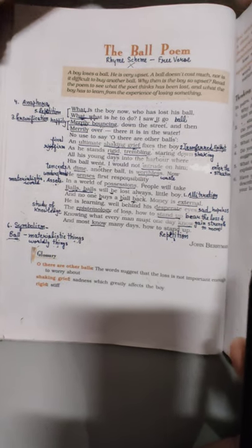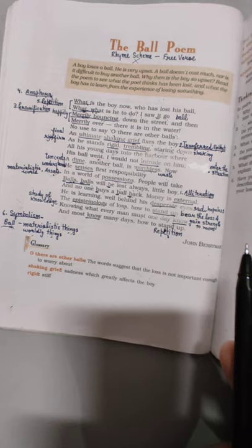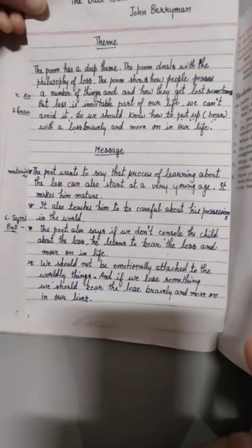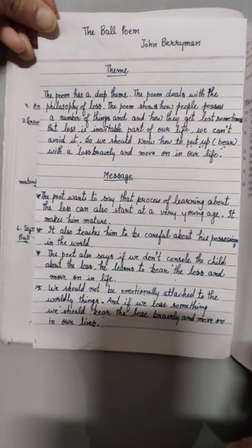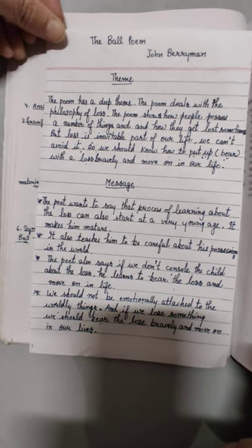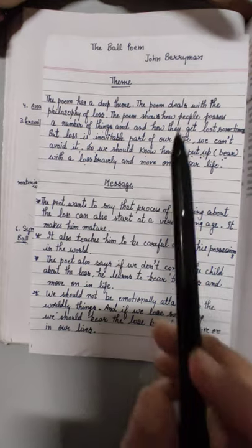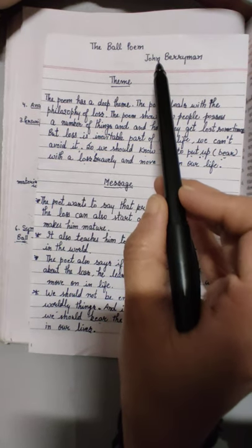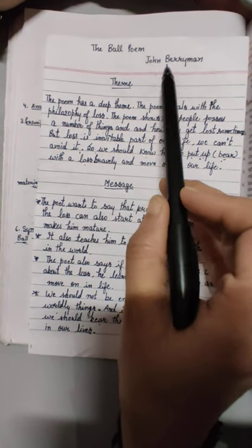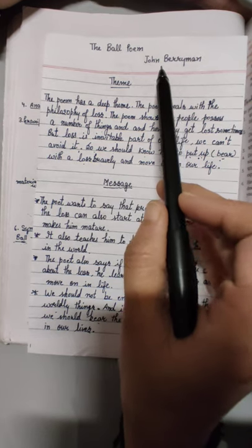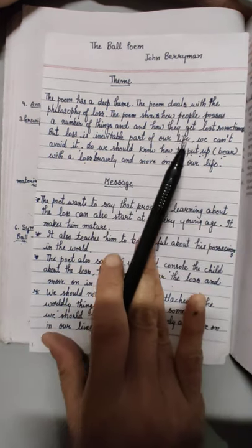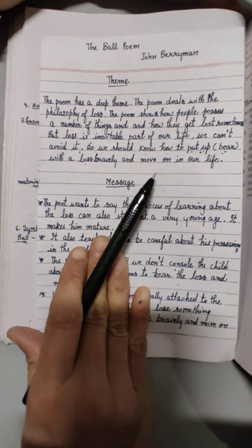I think the poem is clear to you all. And now at the last I would like to discuss the theme and the message of the poem, because without it the poem will be considered incomplete. So let us discuss. The name of the poem is The Ball Poem and the poet is John Berryman. You have to learn the name of the poet also because sometimes in exam it is asked in the extracts. So let us discuss the theme now.